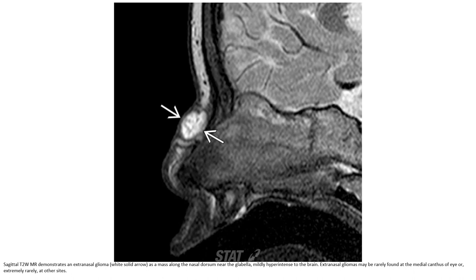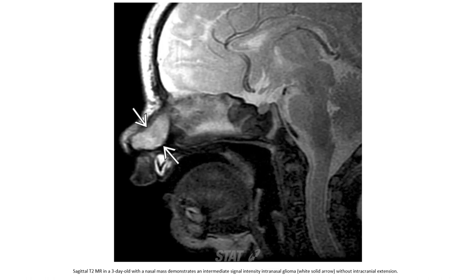On T2-weighted MRI, the mass demonstrates intermediate signal intensity. This is demonstrated in a 3-day-old with nasal mass, showing intermediate signal intensity in an intranasal glioma without intracranial extension. Extra-nasal gliomas may also rarely be found near the orbital region.